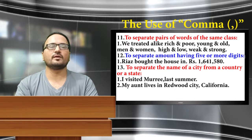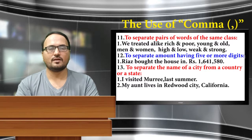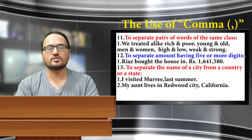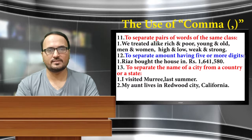The twelfth use of comma: it is used to separate amounts having five or more digits. Example: Riyas bought the house for rupees 16 lakhs, 41,580 rupees.